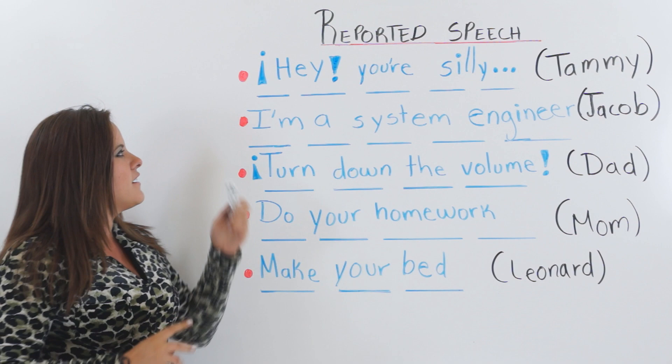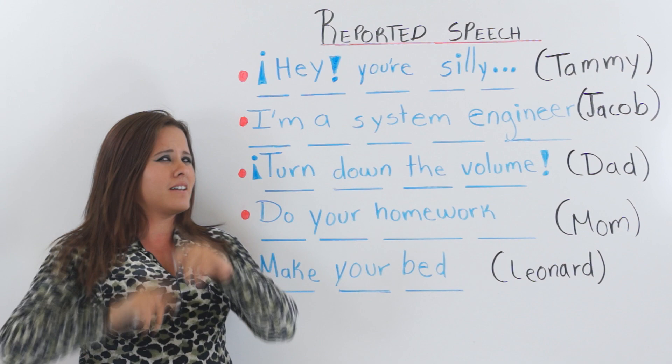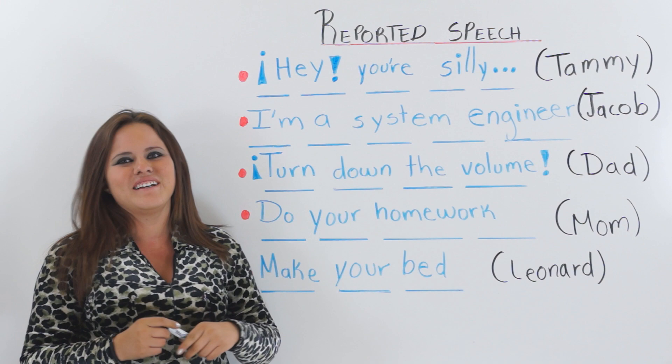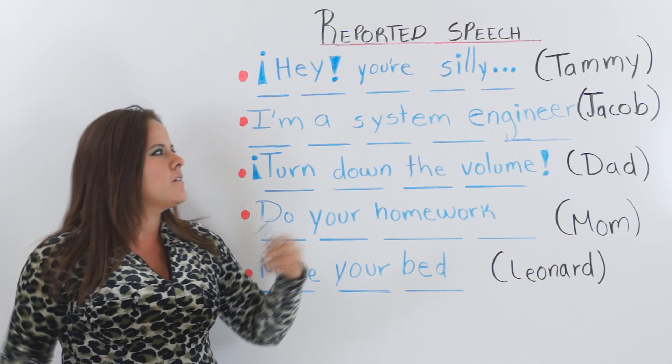The next exercise says: 'I'm a system engineer.' The one speaking is Jacob, which is a man. So how would you turn that into reported speech? That's right — it would be: he said he's a system engineer, or he says he's a system engineer. Again, it all depends on how long ago you heard Jacob say that.